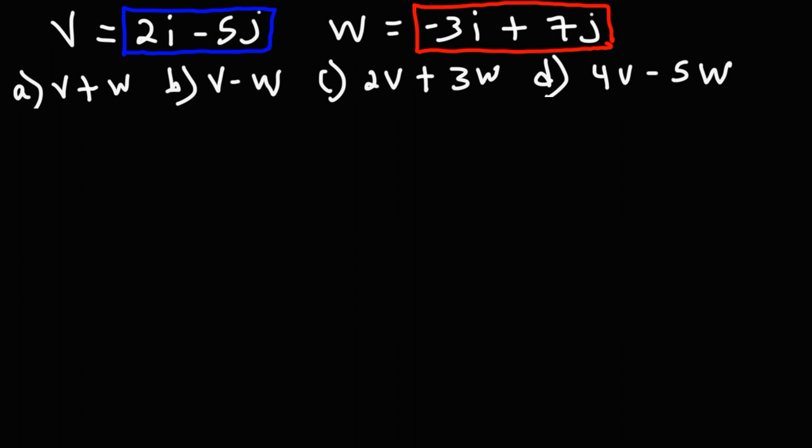Feel free to pause the video and try part d. We have 4v minus 5w, so 4 times (2i minus 5j) minus 5 times w, which is negative 3i plus 7j.